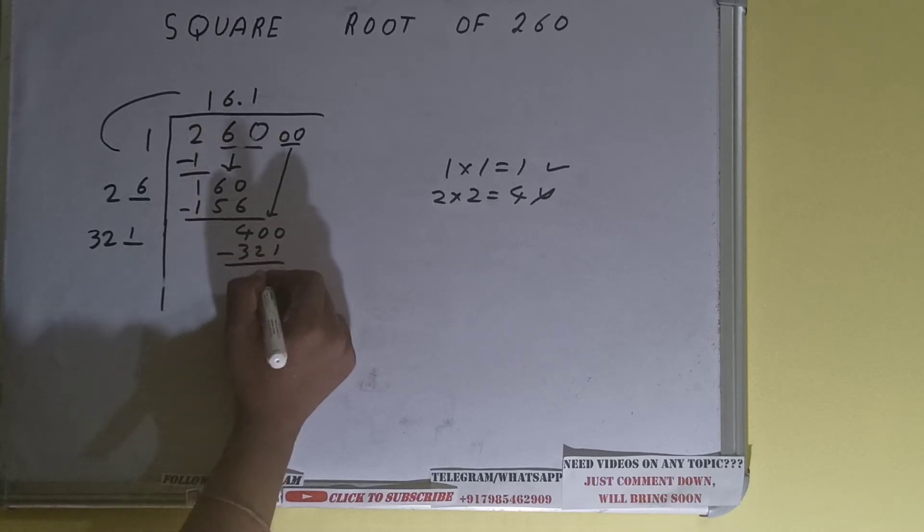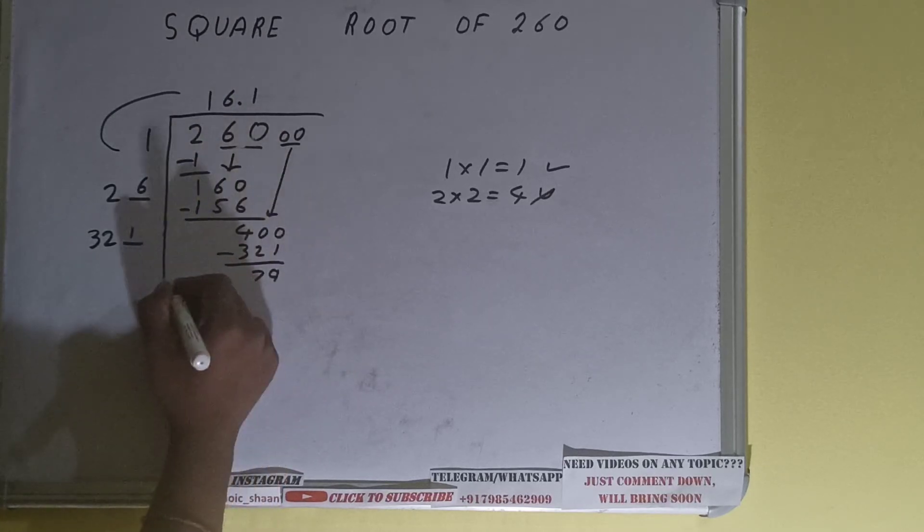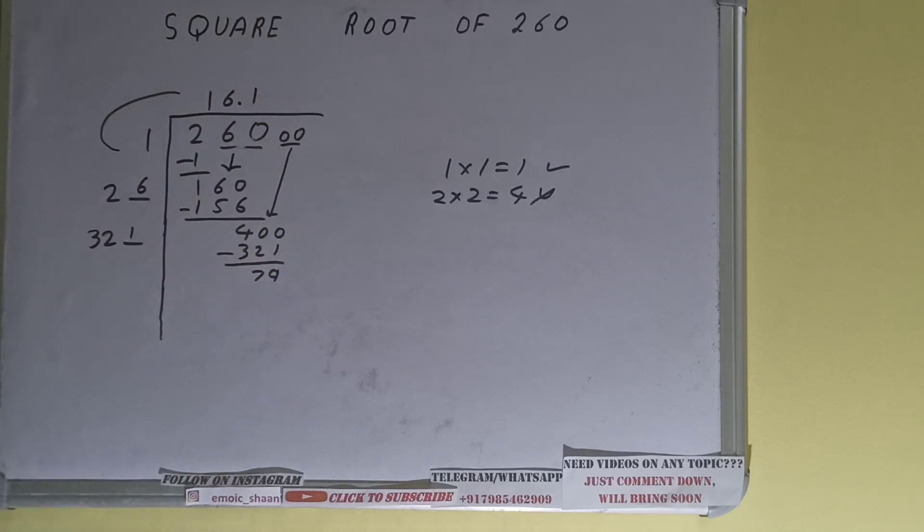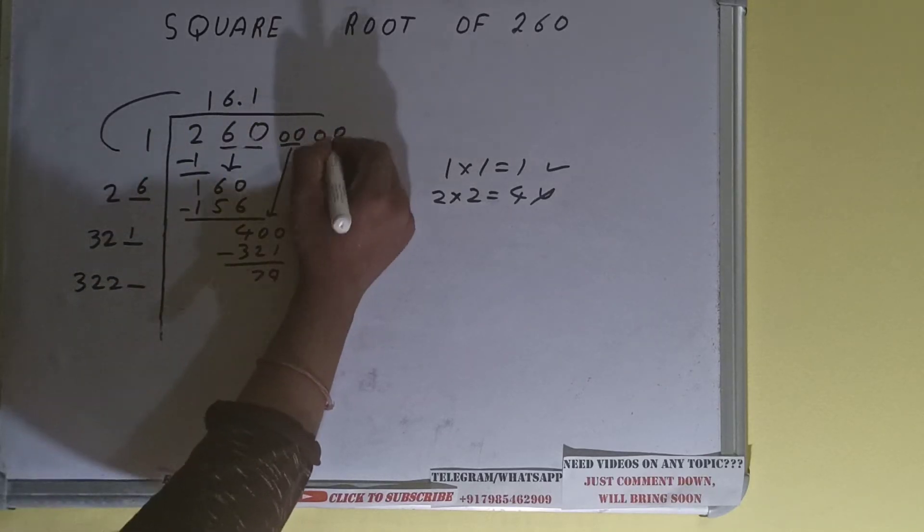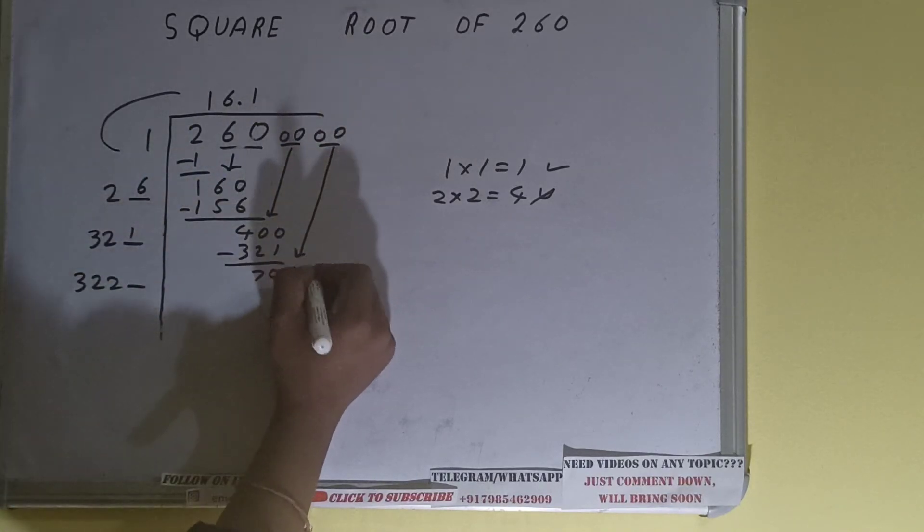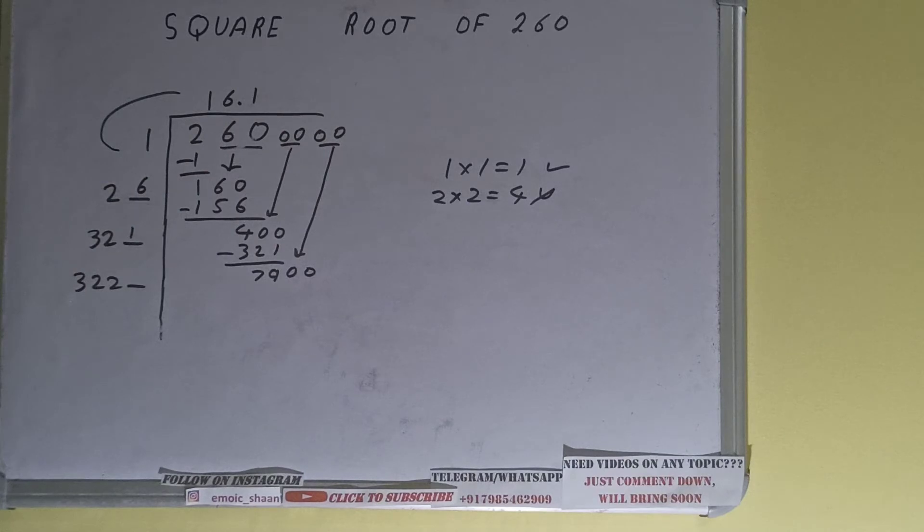Subtract it and we'll be left with 79. Now 321 into 1 we did right, so add both. 321 plus 1 will be 322 and one digit extra over here. Bring one more pair of zeros down and number will become 7900. Now we can try two times.